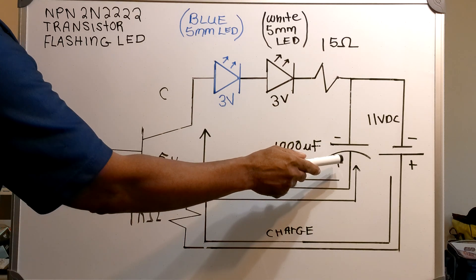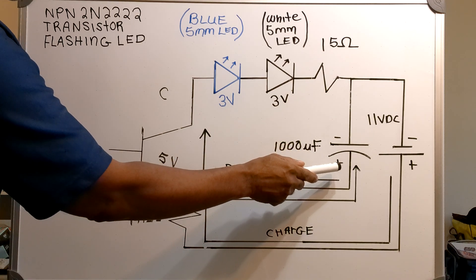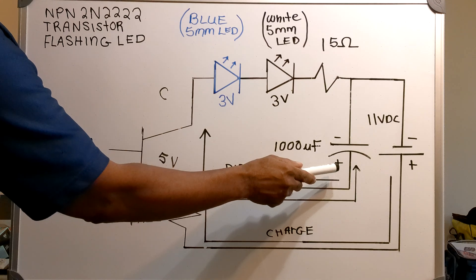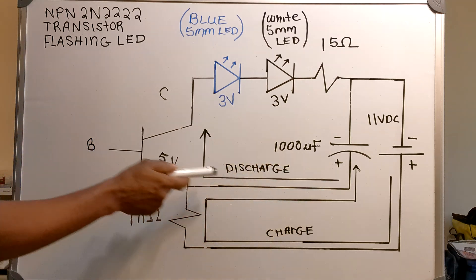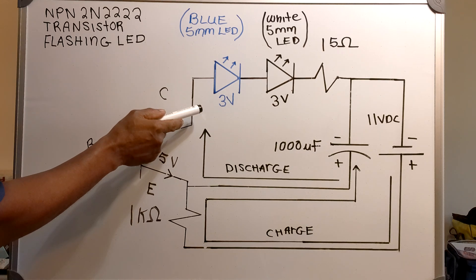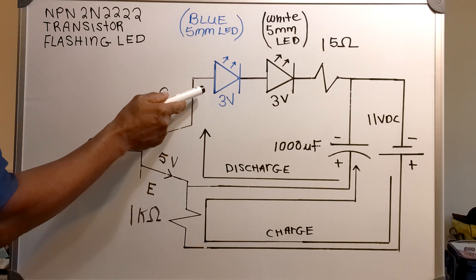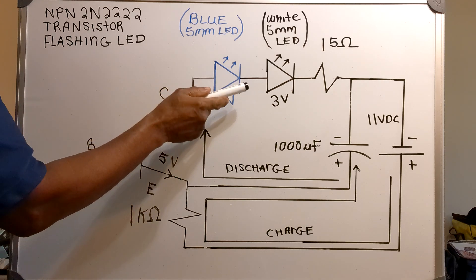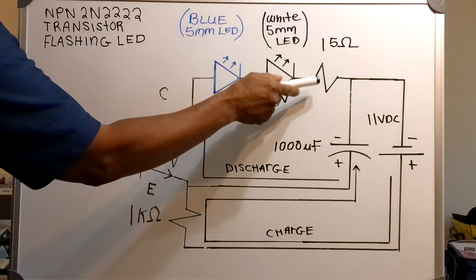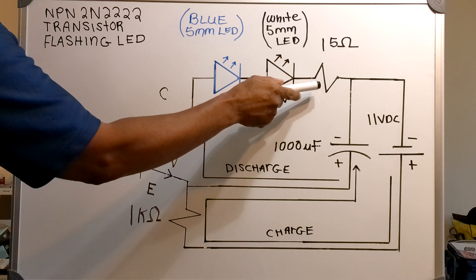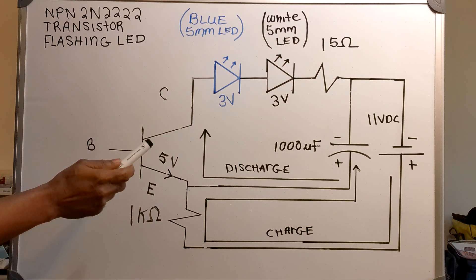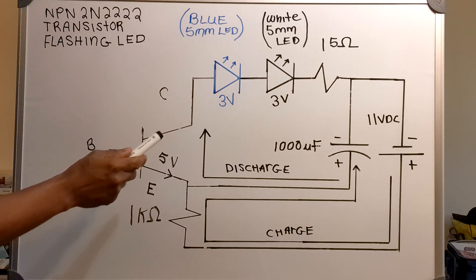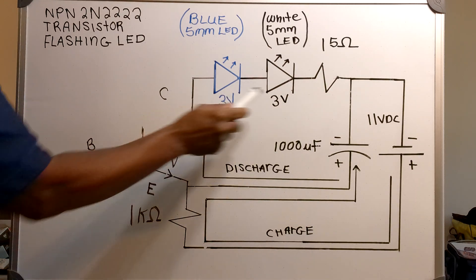Then when the capacitor discharges, it discharges through the LEDs and through the 15 ohm resistor. This is what causes these two LEDs to flash.